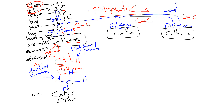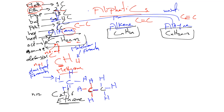Two carbons means 'eth-', and since all bonds are single it's an alkane, so this is ethane, C₂H₆. For the structural formula of ethane, you have two carbons connected by a single bond: C–C. Around each carbon we have four covalent bonds, giving one, two, three on the left and one, two, three on the right — so six hydrogens total.